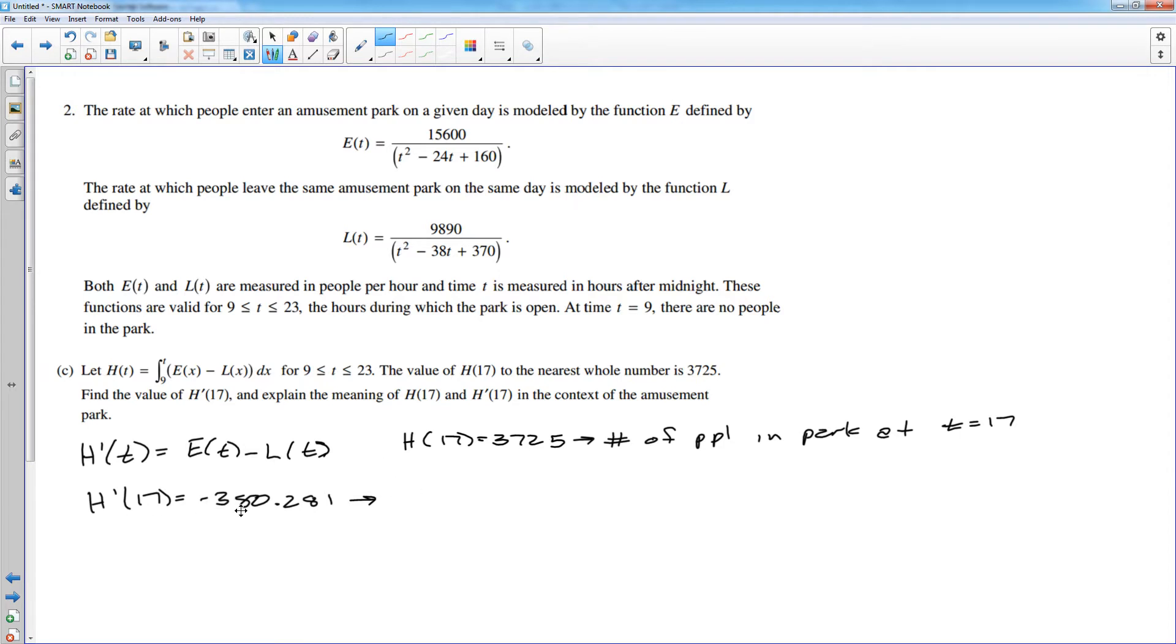What I'm going to do is word it this way. H prime was negative, so that means people are leaving the park. So I'm going to say the number of people in the park is decreasing. And when a derivative is negative, that means a function is decreasing. So the number of people in the park is decreasing at a rate of, and here's where you have to be careful. When you use the word decreasing, that already implies a negative derivative. So the number of people in the park is decreasing at a rate of 380.281. And I'm going to include units. They did not specify to include units, but it's always good to do that. That would be measured in people per hour. So the number of people in the park is decreasing at that rate. You could say it's changing at the rate of negative 381, but you have to tie in the number of people in the park. So there's number C.